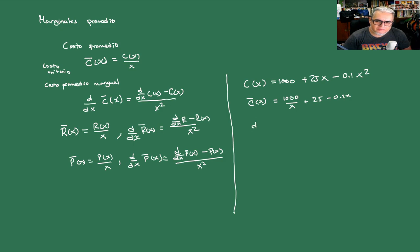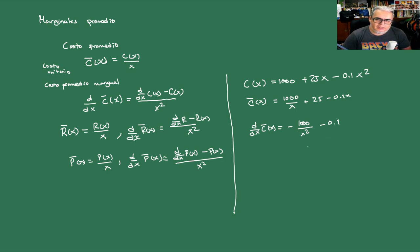Y la derivada, la marginalizada de esta, va a ser −1000/x² − 0.1. Este es el costo promedio marginalizado, es decir, cómo va a crecer el costo unitario de estas piezas de maquinaria. El resto es lo mismo; podemos calcular algún tipo de umbral, etcétera.